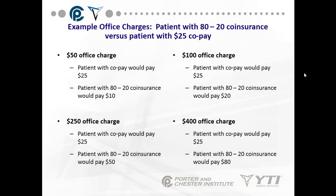Examples comparing co-pay versus 80-20 co-insurance: a patient with a co-pay only pays $25. With an 80-20 plan and a $50 office charge, the insurance pays $40 and the patient pays $10. With a $100 charge, insurance pays $80 and the patient pays $20. With a $250 charge, the insurance pays $200 and the patient pays $50. With a $400 office charge, the insurance pays $320 and the patient pays $80.